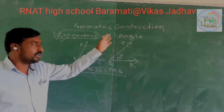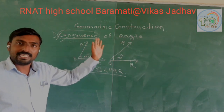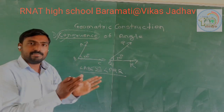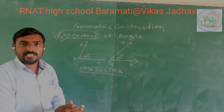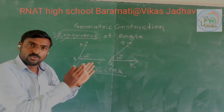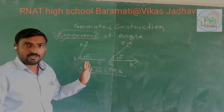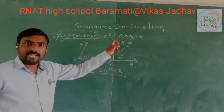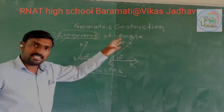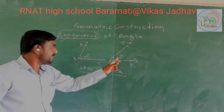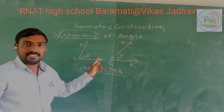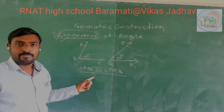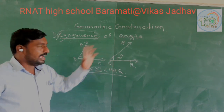In the previous part, we have the congruence of line segments — when the line segments have equal measures, these 2 line segments are congruent. When 2 angles have equal measure, or equal degree, then these 2 angles are congruent angles.